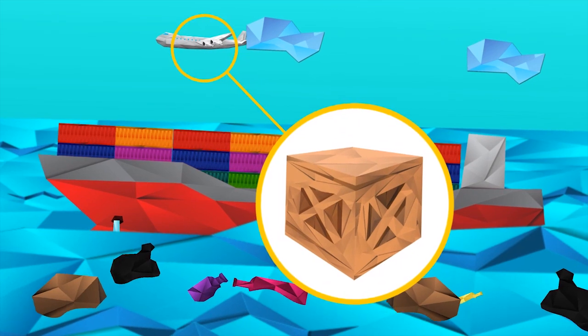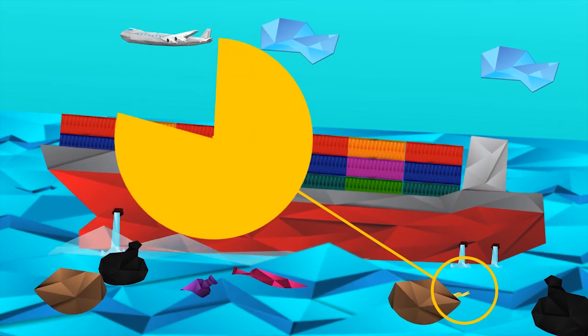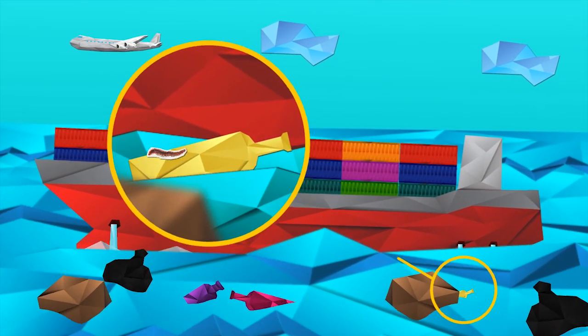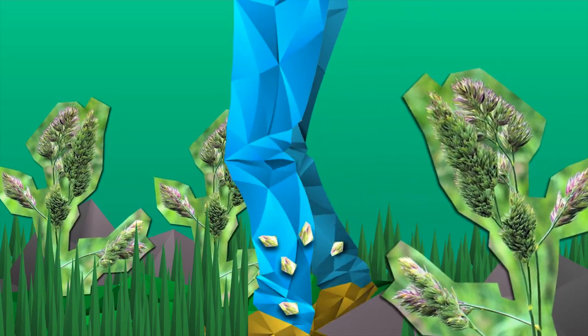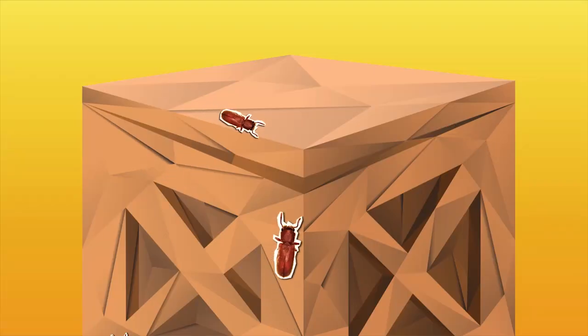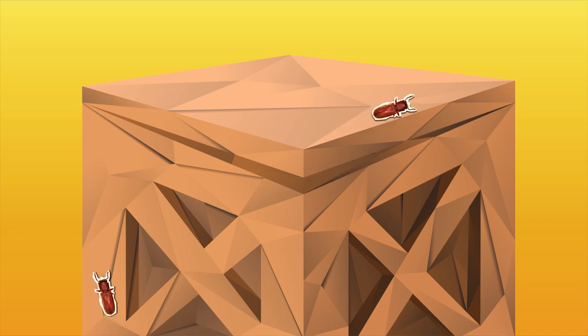Invasive alien species hitchhike on planes, ships, and even on garbage floating in the open seas. Seeds may stick to clothes and suitcases. Insects may be transported through wooden packaging materials.